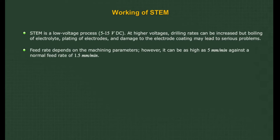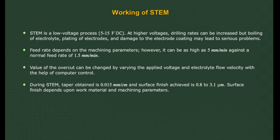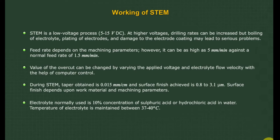In STEM, the feed rate depends on the machining parameters; however, it can be as high as 5 mm per minute against a normal feed rate of 1.5 mm per minute. The value of overcut can be changed by varying the applied voltage and electrolyte flow velocity with computer control. During STEM, the taper obtained is 0.015 mm per centimeter and surface finish achieved is 0.8 to 3.1 µm, depending on work material and machining parameters. The electrolyte normally used is a 10% concentration of sulphuric acid or hydrochloric acid in water, maintained at a temperature between 37 and 40 degrees Celsius.